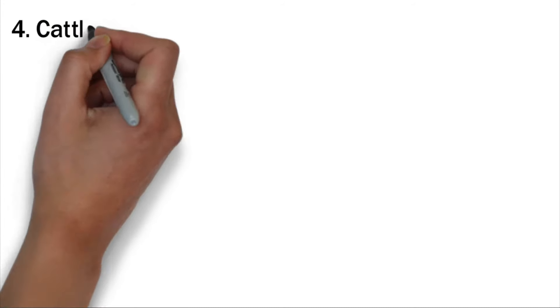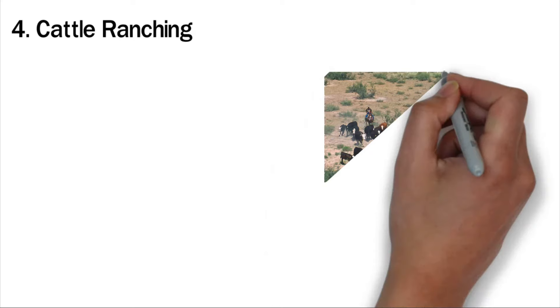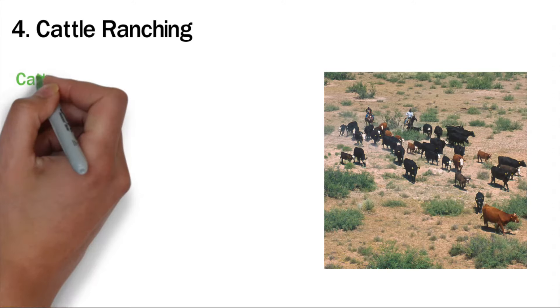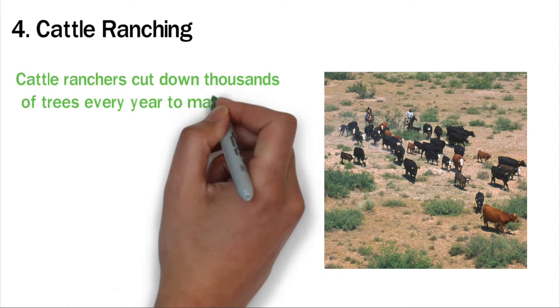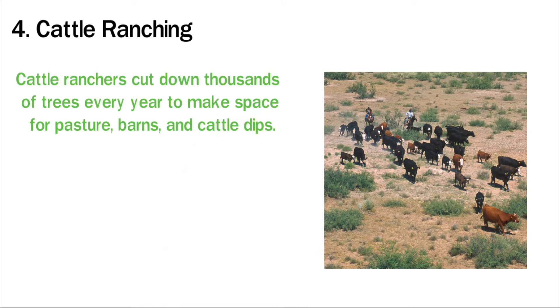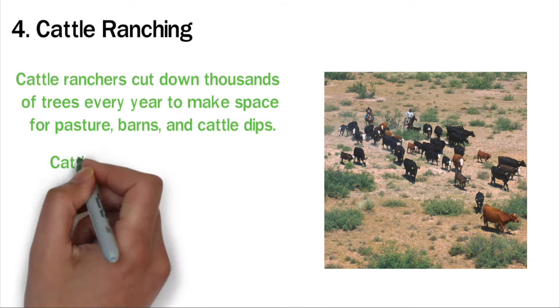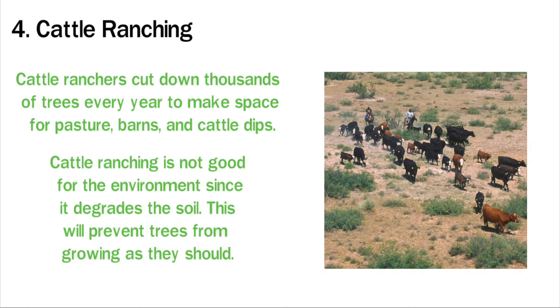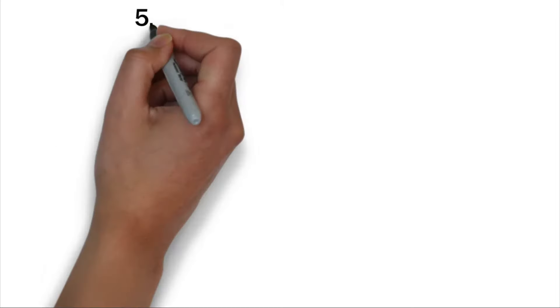Four: Cattle ranching. Cattle ranching is the main cause of deforestation in the earth's tropical rainforests. Large areas of forest cover have been cleared to create room for ranching activities in different parts of the world. Cattle ranchers cut down thousands of trees every year to make space for pasture, barns, and cattle dips. Cattle ranching is not good for the environment since it degrades the soil, which will prevent trees from growing as they should.